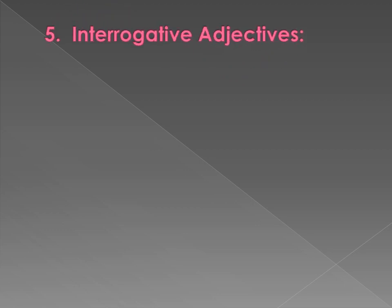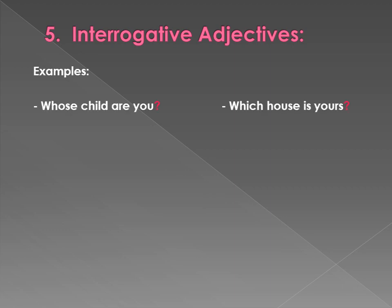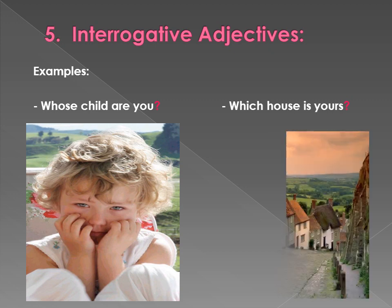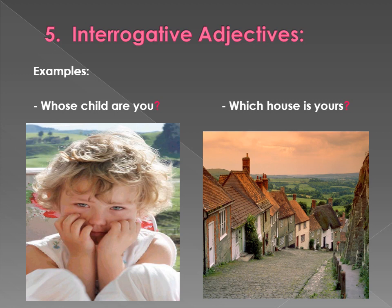Fifth type of adjective is interrogative adjective. Interrogative means questioning — adjectives that ask a question about a noun. For example: 'Whose child are you?' and 'Which house is yours?' In the first sentence the adjective is 'whose' and in the second it is 'which'. Both words are used to ask a question, so they are interrogative adjectives.